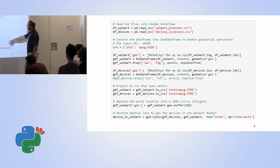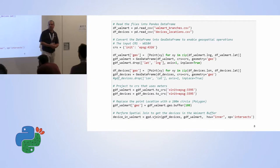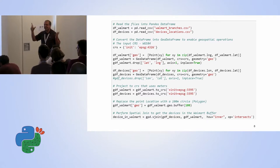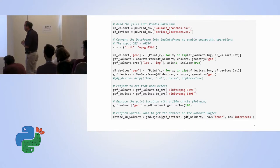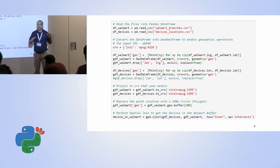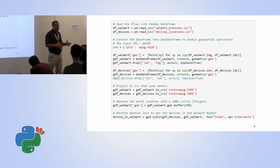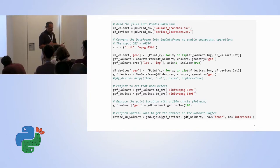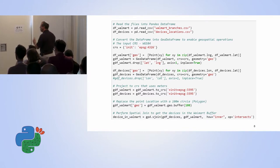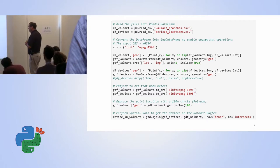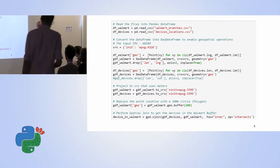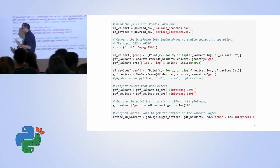And lastly, here's where the magic happens — it's called sjoin: spatial join. We are performing an inner join — the same join terminology between tables, but with geographical data. We look for points that intersect the polygon.